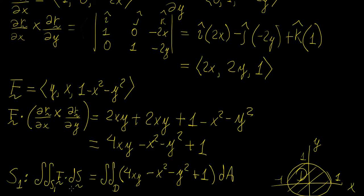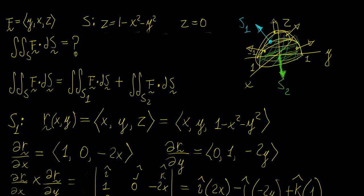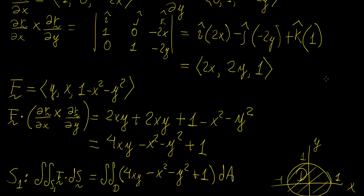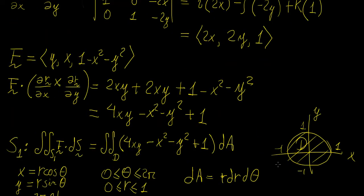We can now write our flux integral for surface S1 as a double integral. We notice that the region of integration on the x-y plane is a circle of radius 1, so it is more convenient to use polar coordinates. Changing variables, the radius goes from 0 to 1, theta goes from 0 to 2π, and the area element dA becomes r dr dθ.